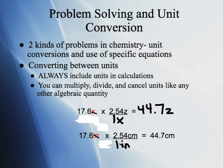Now that we've talked about sig figs in calculations, let's discuss the types of problem solving you'll need to do in chemistry. Basically every problem you'll solve is one of two kinds: unit conversion — switching from one unit to another — or plug and chug into a specific equation, using algebra to isolate the variable and solve. So put on that mindset: is this a unit conversion problem or a simple algebra problem? When converting between units, always include units in the calculation — every single time. Don't be lazy or you won't get it right.